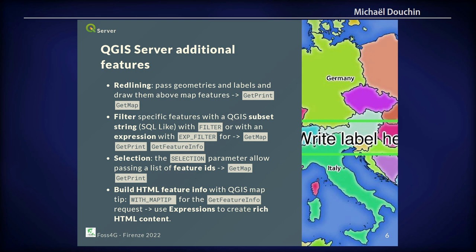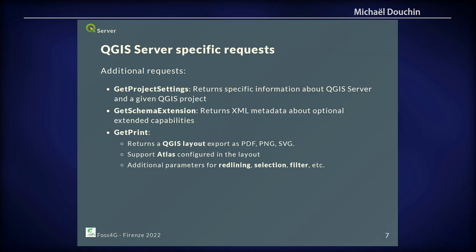You can also use selection to highlight specific features, for example putting a town in yellow, and you can use that in getPrint as well. When you need to identify a feature, you can use QGIS expressions to render text based on the feature's data, allowing you to create rich HTML with great content. QGIS Server also has specific requests such as getProjectSettings, getSchemaExtensions, and the amazing getPrint — you can use a QGIS Print layout and ask the server to export it in PDF, JPEG, or PNG. It also supports Atlas for specific features.